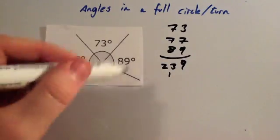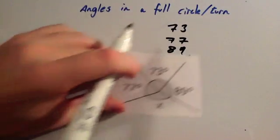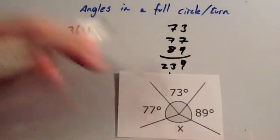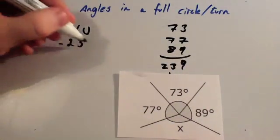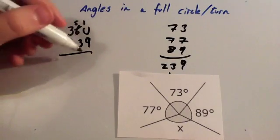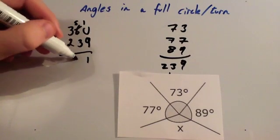We're now going to take that away from 360. 0 take away 9, you can't do this, so you're going to need to borrow one. 10 take away 9 is 1, 5 take away 3 is 2, and 3 take away 2 is 1.